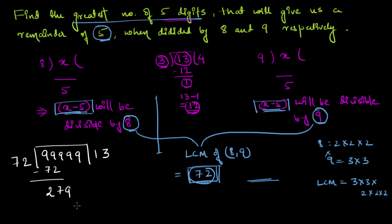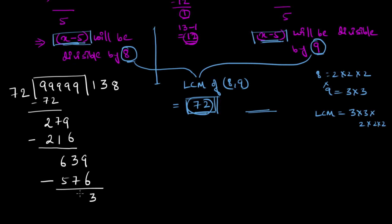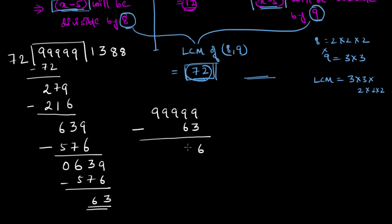Carrying out the long division: 72 threes are 216, subtracting gives 63; bringing down 9 gives 639; 72 eights are 576, subtracting gives 63; bringing down 9 gives 639; 72 eights are 576, subtracting gives 63. So the remainder is 63. This means 99999 minus 63, which equals 99936, is divisible by 72.